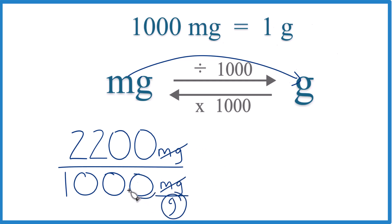Let's move the decimal point one, two, three places. So now we're dividing by one, and then one, two, three places. We end up with 2,200 milligrams equals 2.2 grams.